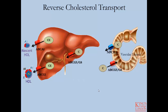This diagram illustrates some of the specific protein transporters involved in the reverse cholesterol transport pathway, specifically the ABC transporters. ABC stands for ATP binding cassette, and each transporter is further designated with a label: either A1, G1, G5, or G8.